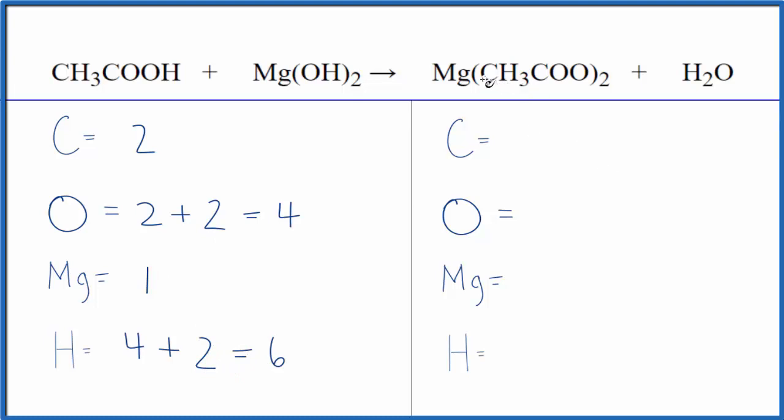On the product side: one, two carbons times two, four of those. Oxygens: one, two times two, that's four. And don't forget we have one here with oxygen, five oxygen atoms. One magnesium. For the hydrogens, we have three times two, that's six, plus we have two here, so that gives us eight total.